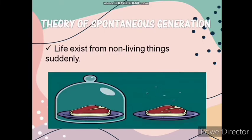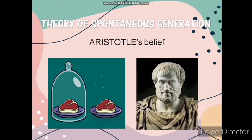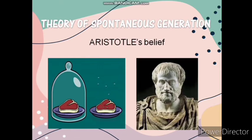The next theory is about the existence of life from sudden non-living things, known as Spontaneous Generation. Some people developed this concept based on their observations. One philosopher who was a great believer of this theory was Aristotle, since he observed that decayed meat had maggots and that stored grains eventually had rats, which he believed were spontaneously existing. But as time passed, many scientists made their own arguments and experiments to disprove the theory of spontaneous generation.